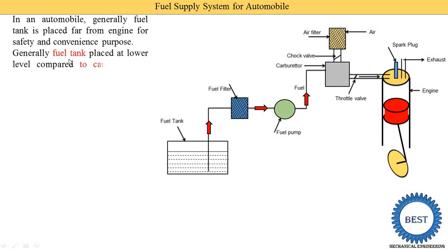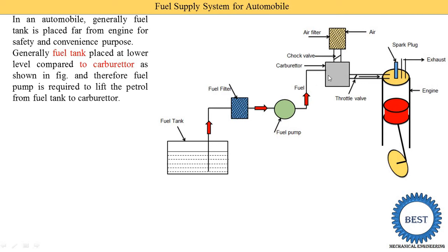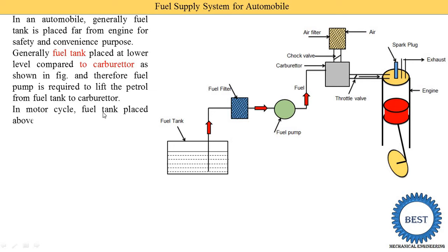Generally the fuel tank is placed at a lower level compared to the carburetor, as shown in this figure. The carburetor is at a higher level and the fuel tank is at the lower level. Therefore, a fuel pump is required to lift the petrol from the fuel tank up to the carburetor. The pump supplies the fuel from the fuel tank to the carburetor.